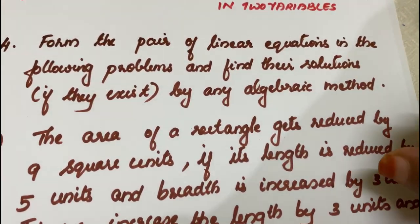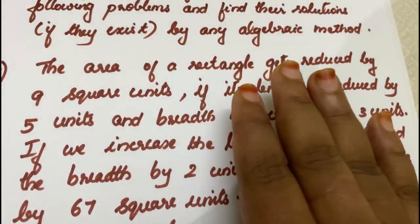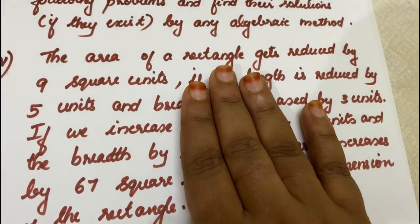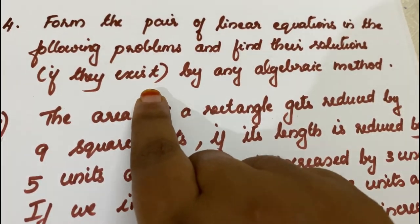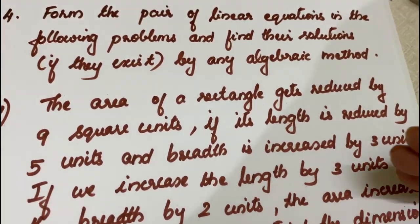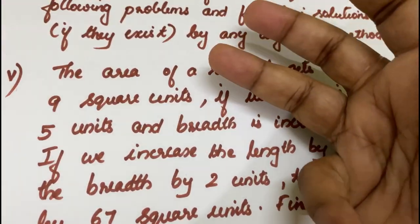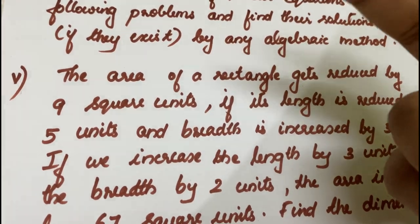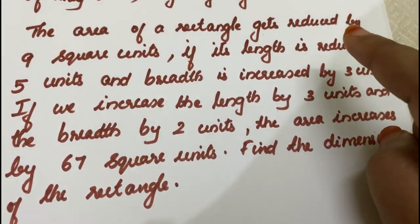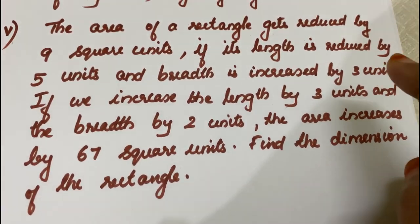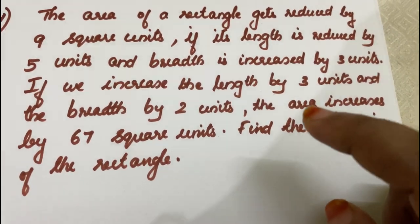This is the question: Form the pair of linear equations in the following problems and find their solutions if they exist by any algebraic method. We have a problem and we need to form two pairs of linear equations and find their solutions. The algebraic methods we can use are: substitution method, elimination method, and cross multiplication method.